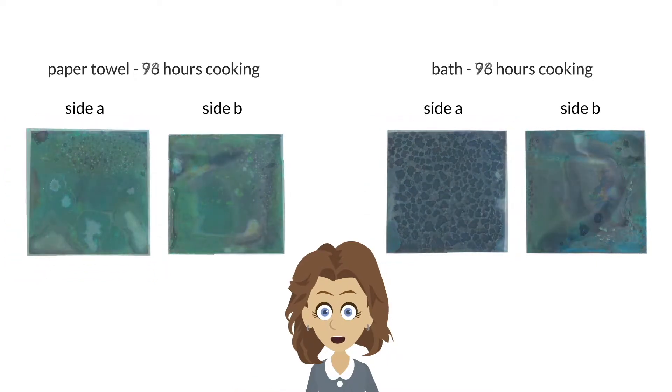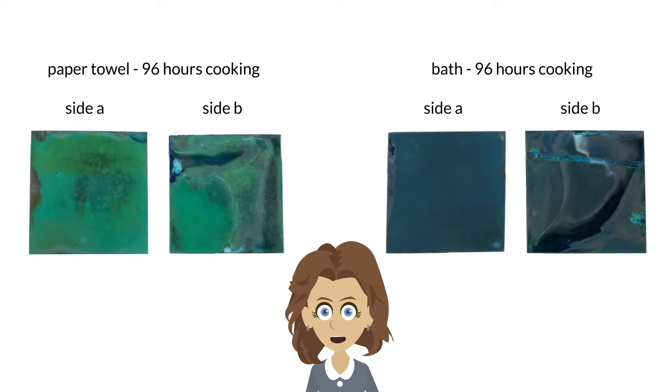96 hours, and gone are the scales. Again, we see a marked difference in the colors. The paper towel fume chamber, with bright green and bits of indigo blue, and the bath fume chamber, dominated by various shades of blue.